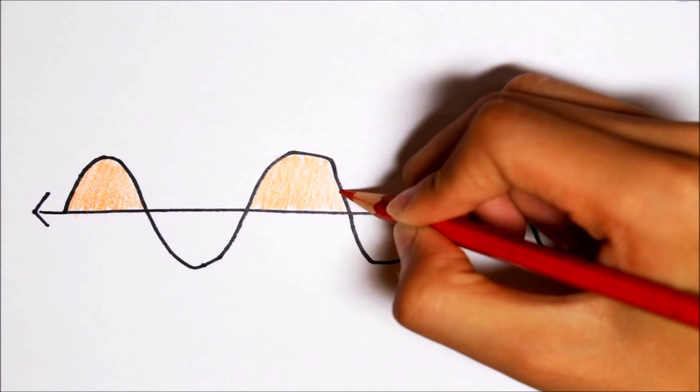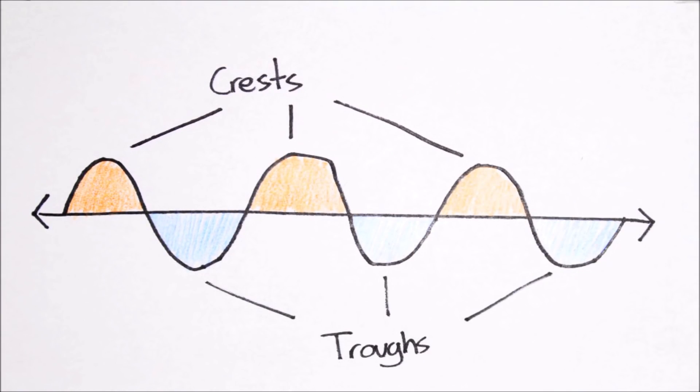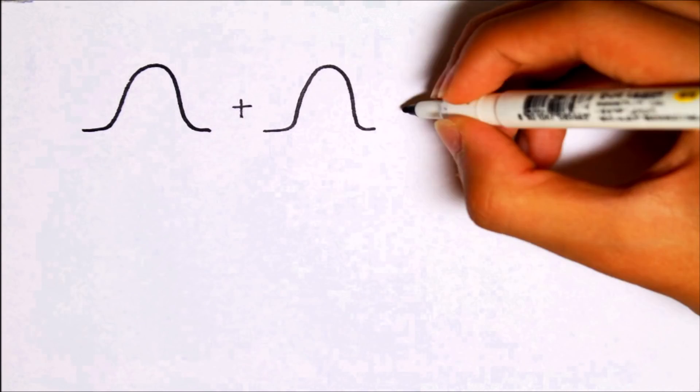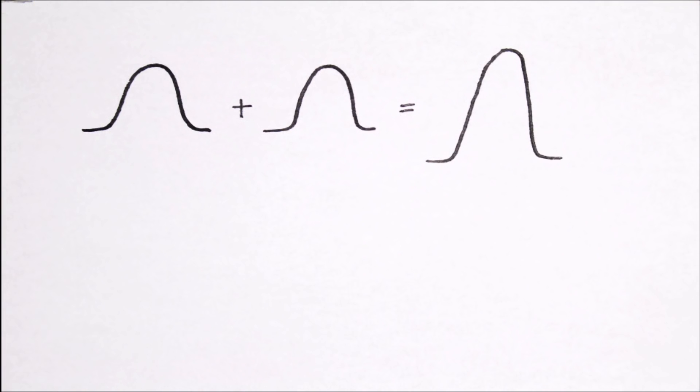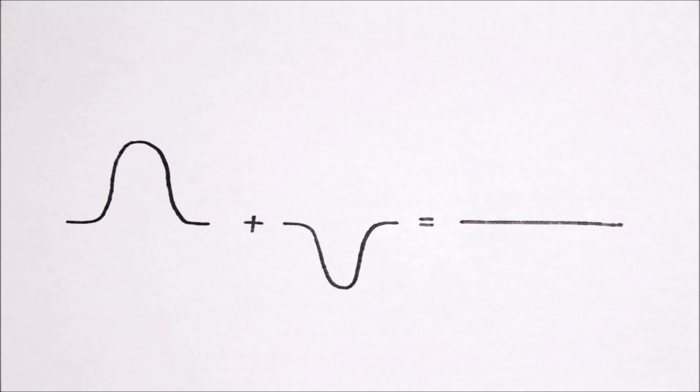If we have a wave like such, these parts here are called crests, and these are called troughs. If two crests like such meet, then together they form an even bigger crest. The same applies for a trough. A trough plus a trough equals a bigger trough. When a crest and a trough meet, as you would expect, they would cancel each other out, leaving nothing.